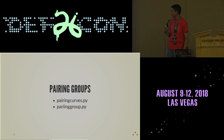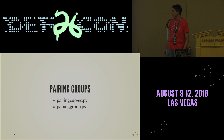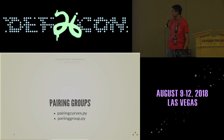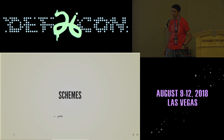Was anybody here for the Pythia talk yesterday? I suspect, though I haven't actually tested this, that it would be possible to implement that scheme using Charm, because you have access to pairings and from what little I could see, all you need are hashes and elliptic curve pairings.